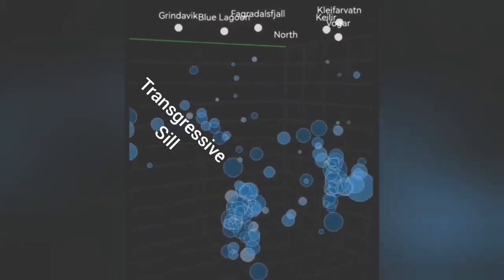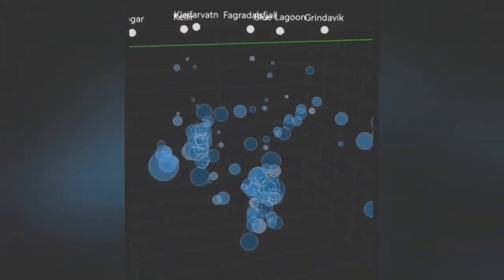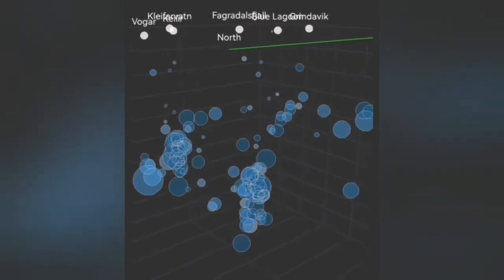We call it a transgressive sill in geological terms, a sill which has an angle and just rises gradually, but not vertically.